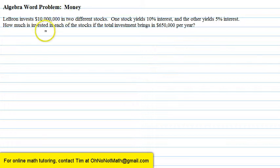The first thing we need to know with this type of problem is the formula: principal P times rate R times time T equals interest. So let's set up a table based on that formula. We have two different stocks, a 10% stock and a 5% stock.